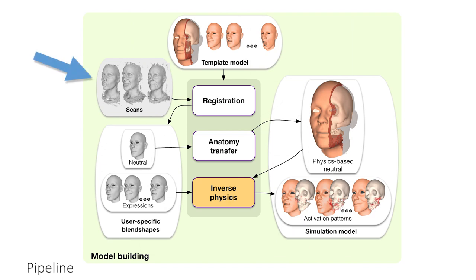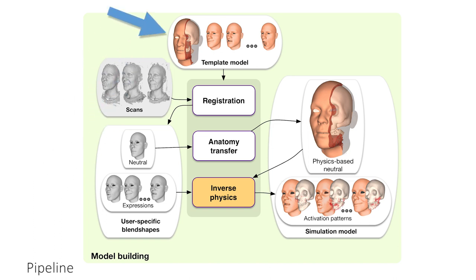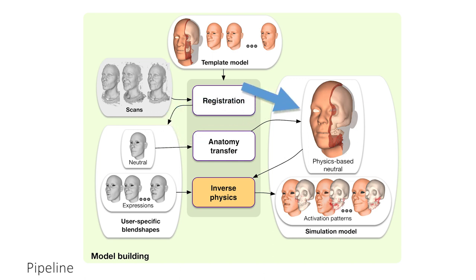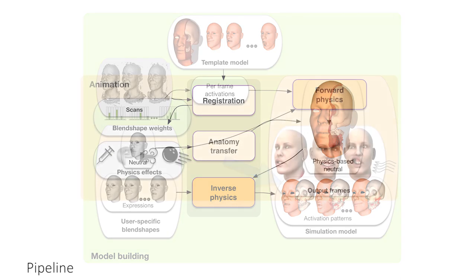As input, we assume a set of surface scans of a user that are first transformed to a user-specific blend-shaped model. We have built an anatomically-inspired volumetric template model that is then adapted to the neutral scan through the anatomy transfer process. We thus obtain a physics-based neutral representation of the user. Subsequently, our inverse physics solver computes suitable muscle activations of the simulation model to best approximate each expression blend shape.